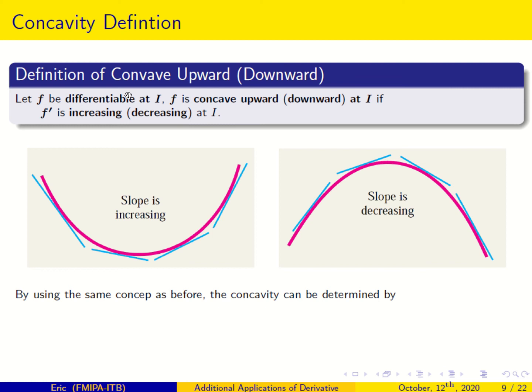Let f be the principal function at interval i. f is concave upward at i if f' is increasing. So if f' — the slope of the tangent line — is increasing, then f is concave upward. With the increase of x, the slope is increasing: from negative to positive.